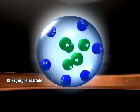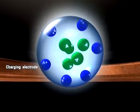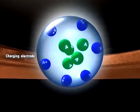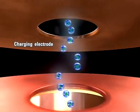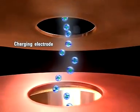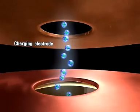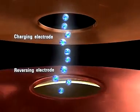Nebulized droplets pass through an electrode that charges the droplets and establishes the preferred ion polarity. Momentum from the nebulizing gas carries the charged droplets through a field established by the charging and reversing electrodes.